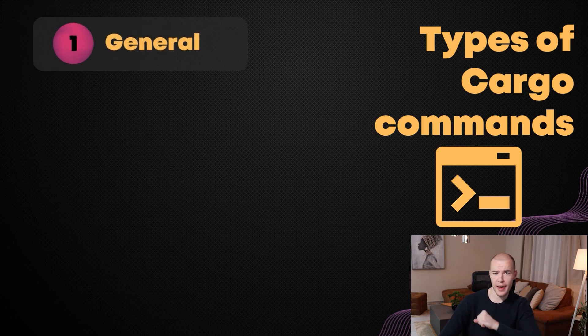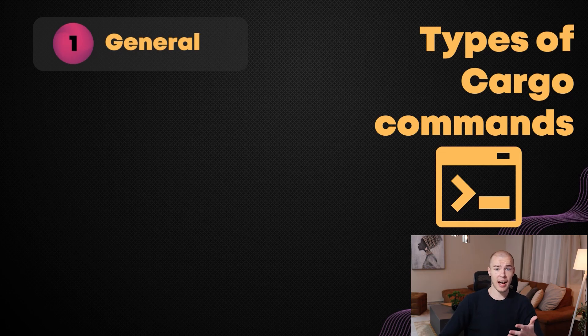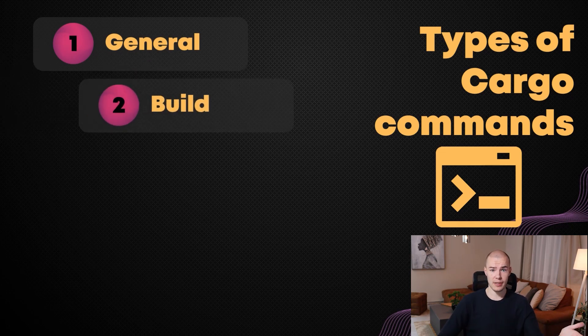We are going to start things off with general commands! General commands are used to get us some additional information about our project or cargo in general. The second category are build commands and, you guessed it, they're used for building our project, for running it, and for checking our code if it's valid or not, if it has any errors and stuff like that.